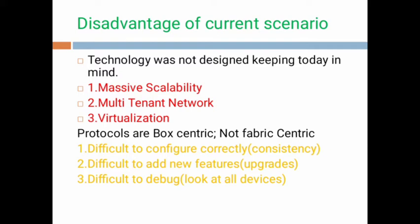Protocols are box-centric, not fabric-centric. Box-centric means a small-scale organization; fabric-centric means a large-scale organization. The difficulties here include: difficult to configure correctly — for example, which system comes first, which system comes later, we have to specify the order, and the continuity is missing. Difficult to add new features: when new technology arrives, we need to update older versions to newer versions, and we are struggling here.